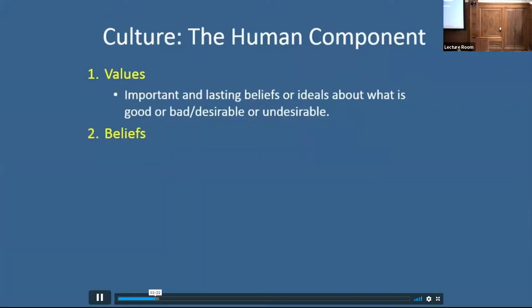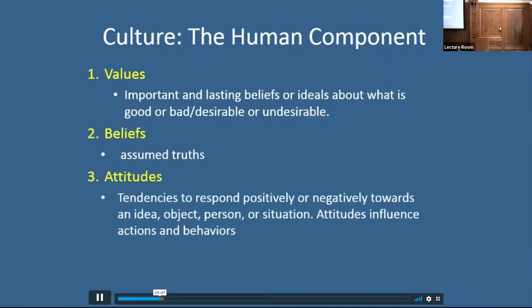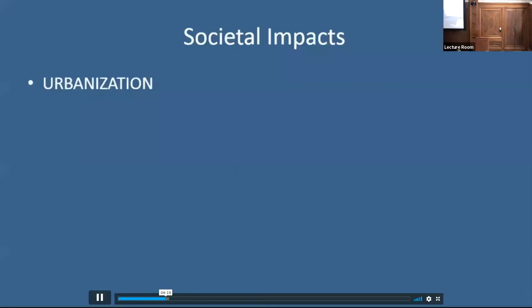A second component are beliefs. Beliefs are assumed truths — they can't be proven, but they're beliefs. We all hold beliefs about religion, about the future, about democracy, about world affairs. We also have a third dimension called attitudes. Attitudes are those tendencies for us to respond in certain ways to an idea, an object, or a new idea or situation. And those attitudes, beliefs, and values inform the fourth dimension: behaviors. We can infer from some cases people's attitudes, values, and beliefs from their behaviors, and we also know that attitudes, values, and beliefs inform how we act.